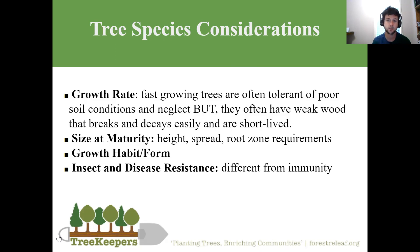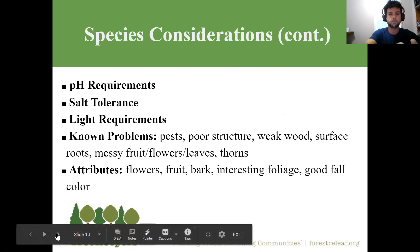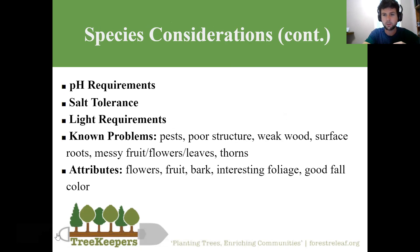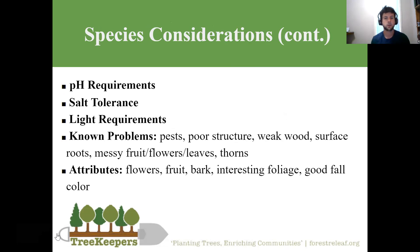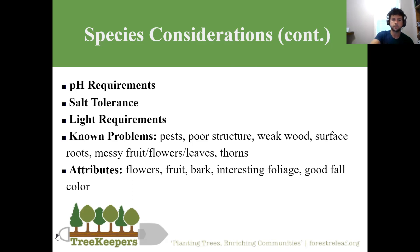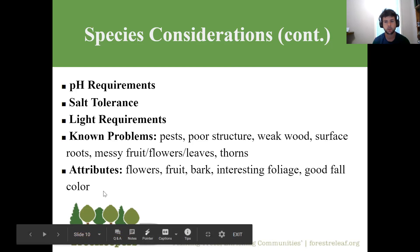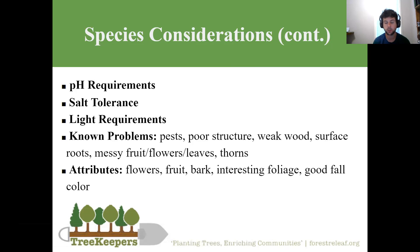pH requirements: trees typically want slightly acidic soil, but urban soils are often slightly to extremely alkaline. Look for a tree that can tolerate some alkalinity unless you have nice acidic soil. Salt tolerance is huge if planting near paved areas that get de-iced in winter — salt will cause serious issues. Consider known problems: pests like emerald ash borer, poor structure like bradford pear, and weak wood like cottonwood or silver maple.